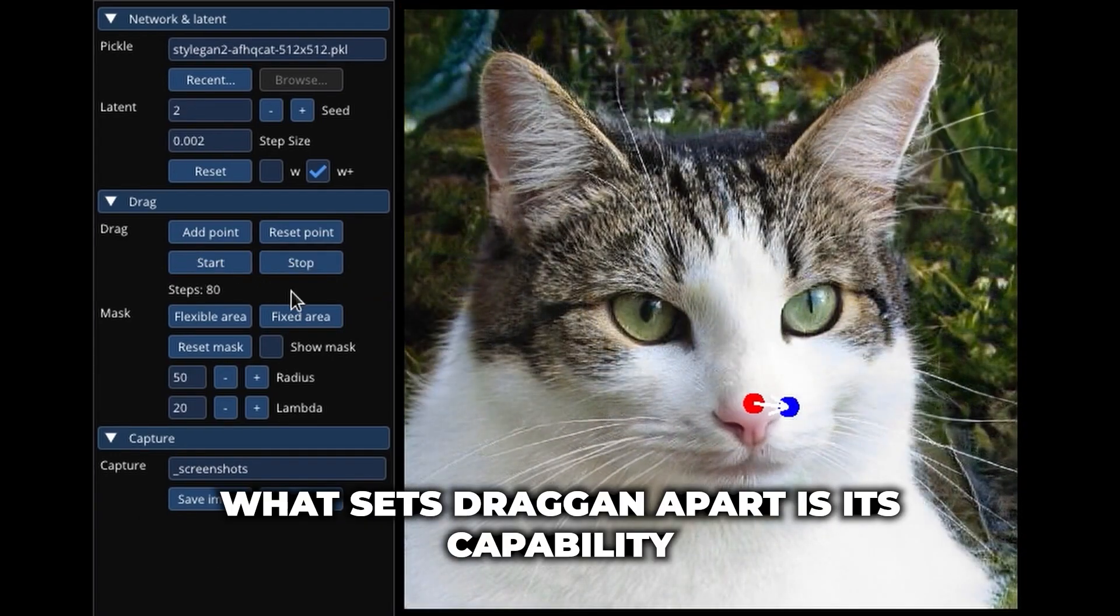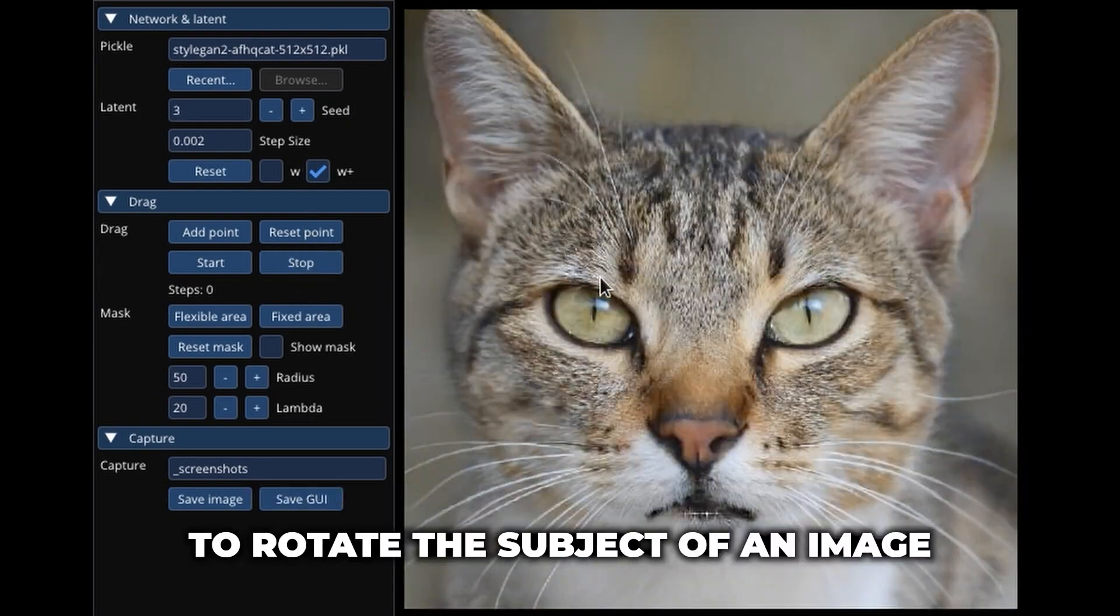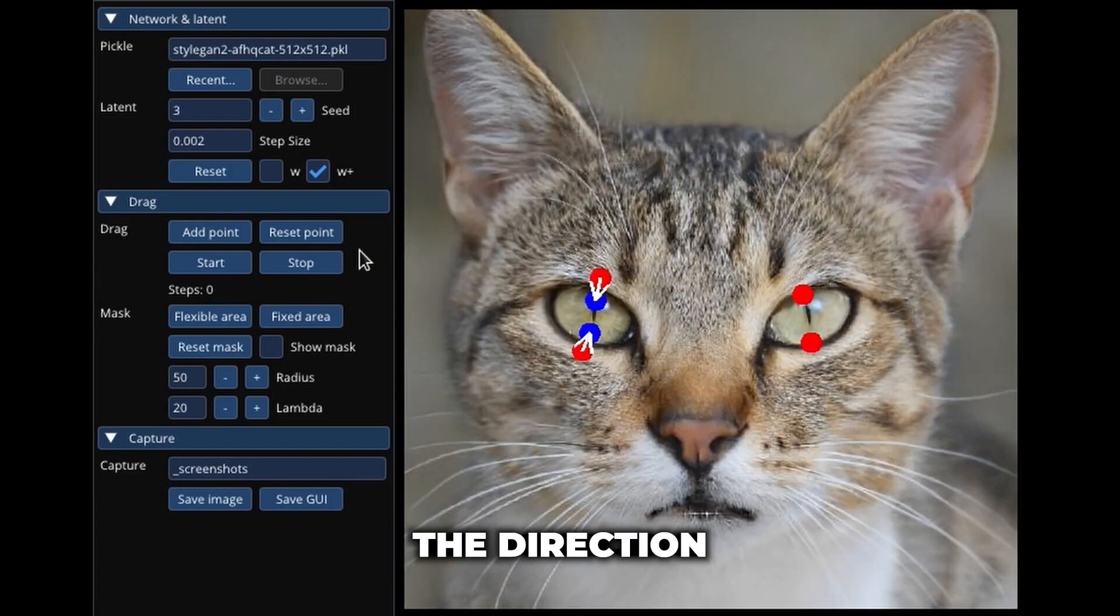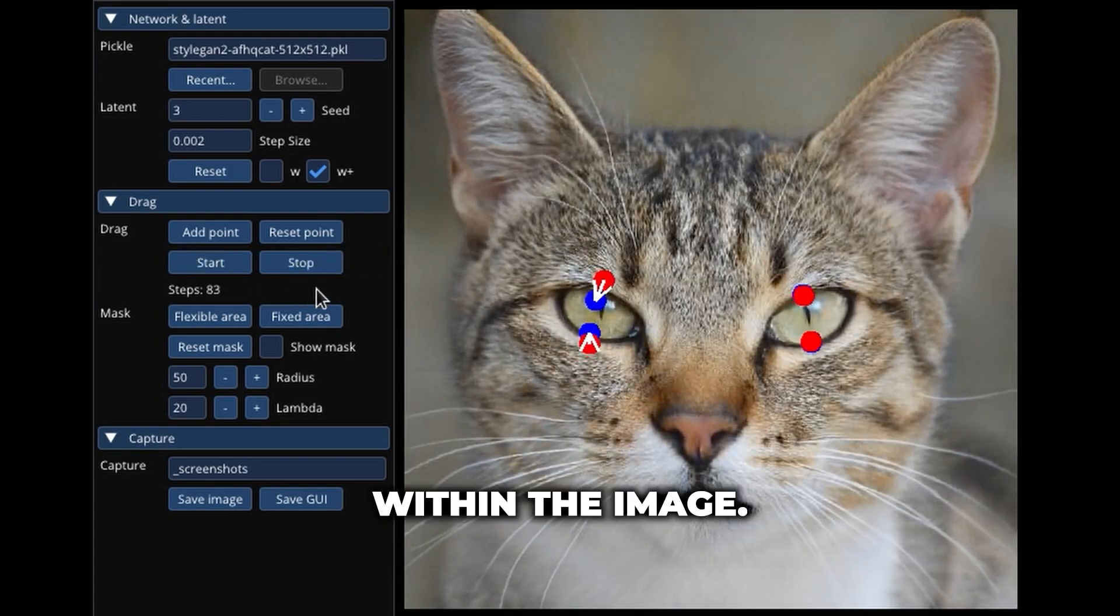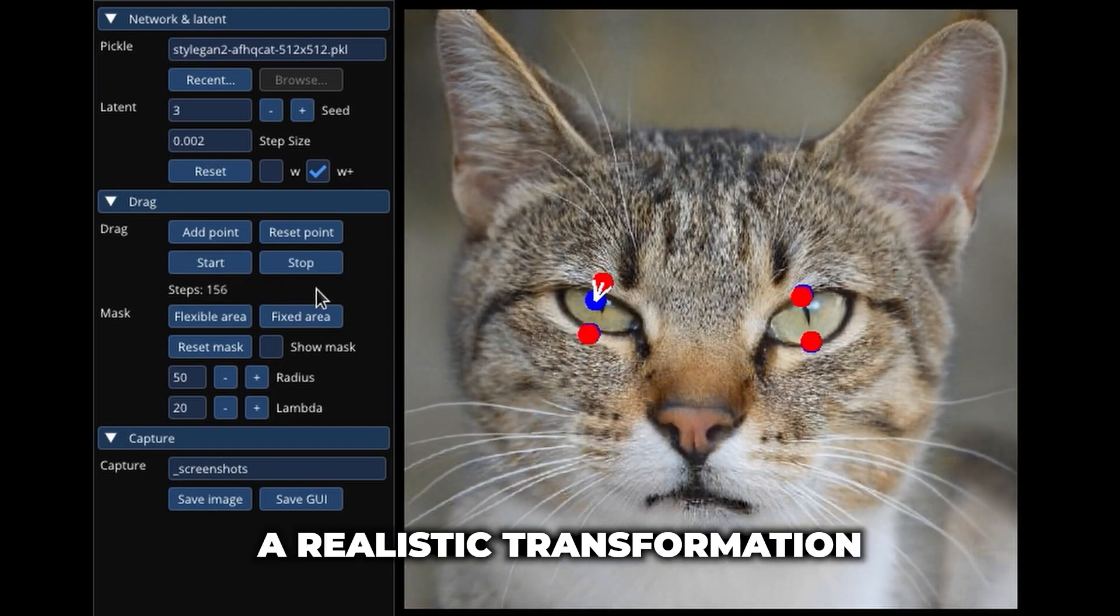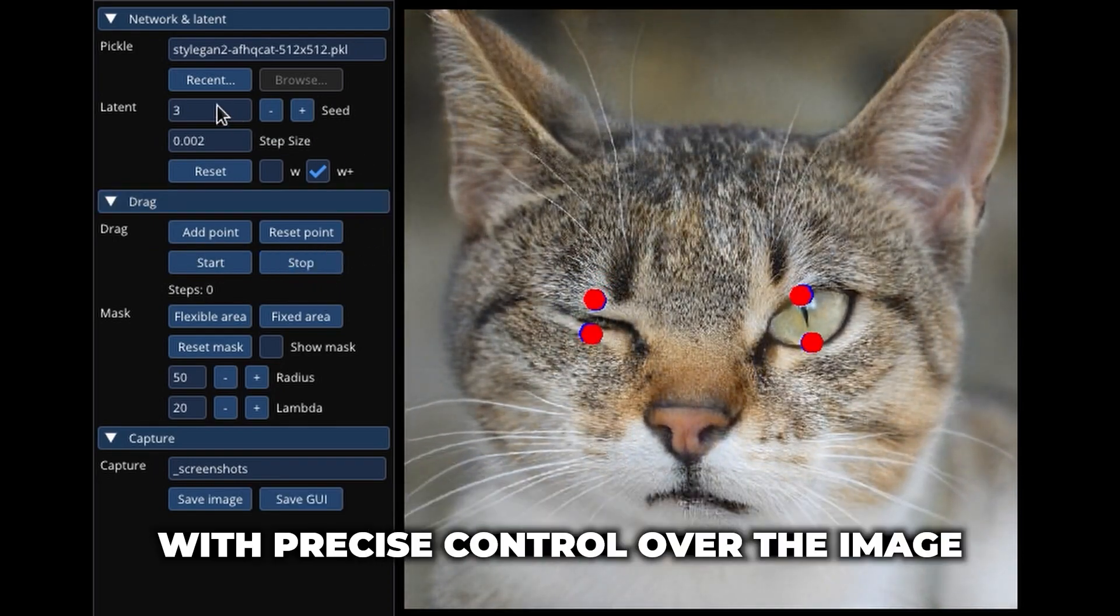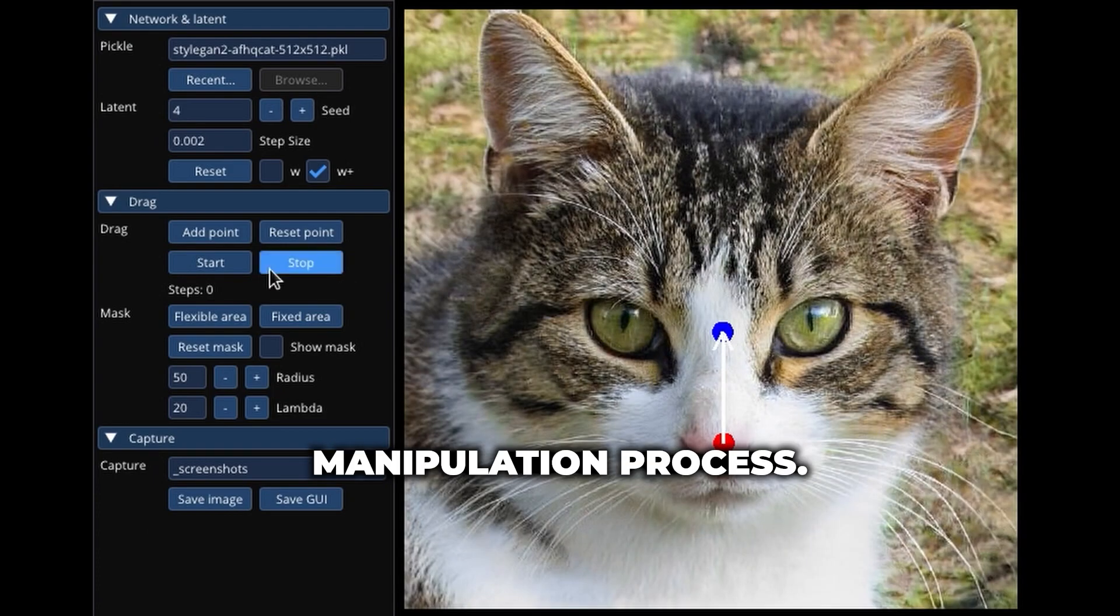What sets Dragan apart is its capability to rotate the subject of an image as if it were a 3D model. This means users can change the direction a person is facing or adjust the orientation of objects within the image. The system generates a realistic transformation that aligns with the desired rotation, providing users with precise control over the image manipulation process.